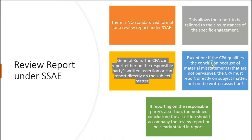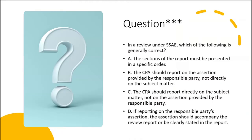That's because we're not reviewing financial statements — we're either reporting on the responsible party's written assertion or directly on whatever the subject matter is. General rule: the CPA can report either on the responsible party's written assertion or directly on the subject matter. The exception: if the CPA qualifies the conclusion because of material misstatements, then the CPA must report directly on the subject matter and not on the written assertion. The exam loves this for its wordiness.